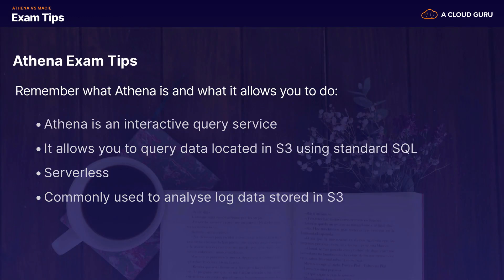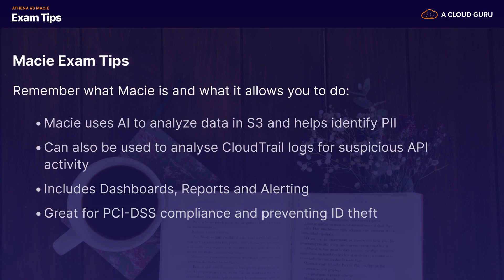So they're similar but different services. Going into your exam, remember: Athena is an interactive query service that allows you to query data located in S3 using standard SQL. It's serverless and commonly used to analyze log data stored in S3. Whereas Macie is a security service — it uses AI to analyze your data in S3 and help identify personally identifiable information or PII. It can analyze CloudTrail logs for suspicious API activities, and includes dashboards, reports, and alerting. It's great for PCI DSS compliance and preventing ID theft.